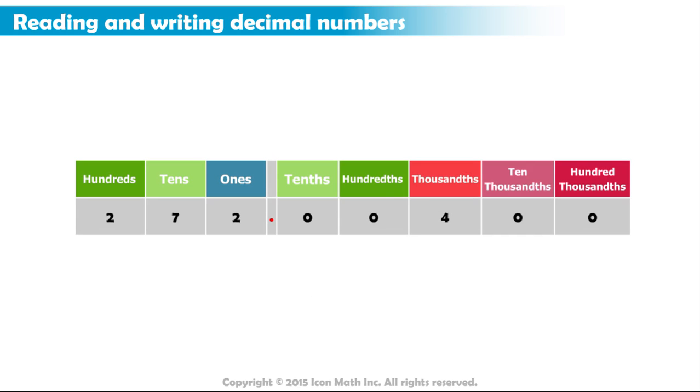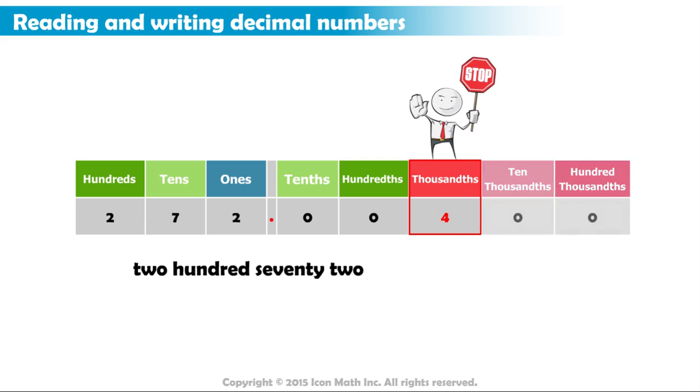Now, try reading this number on the place value chart. The whole number part is 272. What about the decimal part? First, we count the decimals in left to right order. We have two zeros, then one 4, and finally two zeros. But, as we said, we should ignore zeros that are not followed by a non-zero digit, so we stop at 4 and ignore the rest of the zeros on the right.